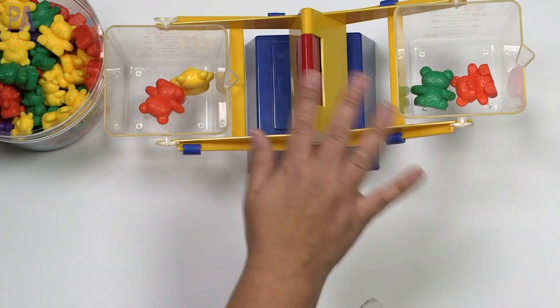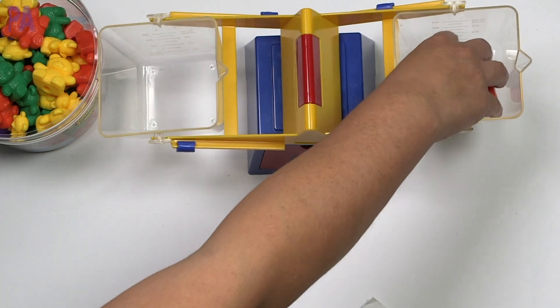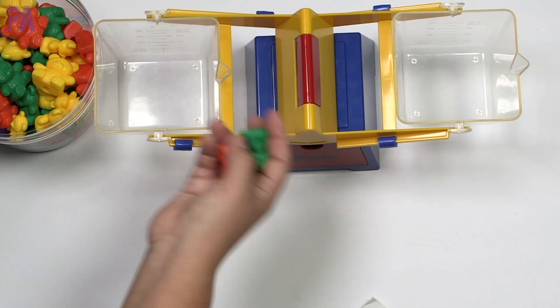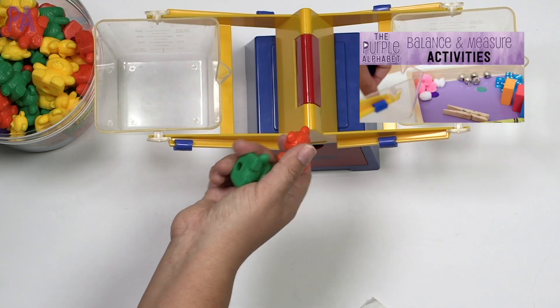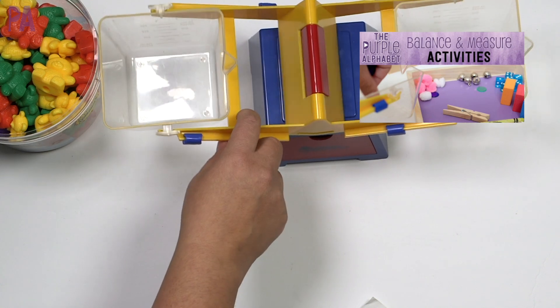You can expand past the bears too by using household objects. I think a long time ago, I did a whole video about all kinds of different household objects that you could use for measurement and learning about measurement. That's an old vintage purple alphabet video, but it still had a lot of good ideas and a lot of it involved measurement with the scale too.